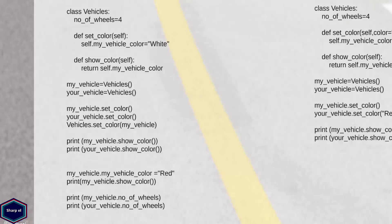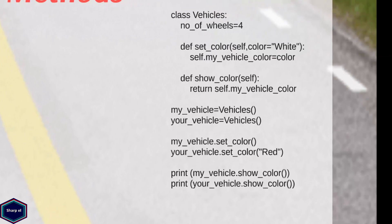Similarly, a method can also have multiple arguments. In this example, setColor method takes two arguments, self and color. I have set the color argument equal to white. So I can call setColor method with or without giving color argument as shown in this example.